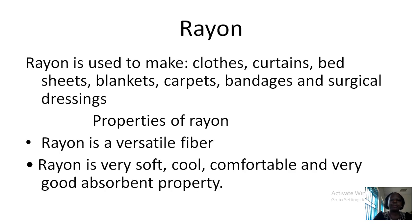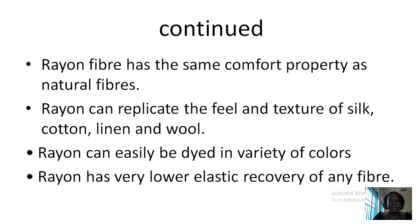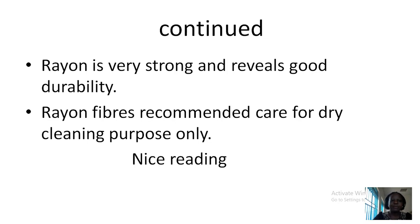Then lastly we also have Rayon. Rayon is used to make clothes, curtains, bedsheets, blankets, carpets, bandages and surgical dressings, to mention but a few. What are the properties of Rayon? Rayon is a versatile fiber. It is soft, cool and comfortable, with very good absorbent property. Rayon fiber has the same comfort property as other natural fibers. Rayon can duplicate the feel and texture of silk, cotton, linen and wool. Rayon can also be easily dyed in a variety of colors. Rayon has very low elastic recovery from any fiber. Rayon is very strong and reveals good durability. Rayon fiber is recommended for dry cleaning purposes only.